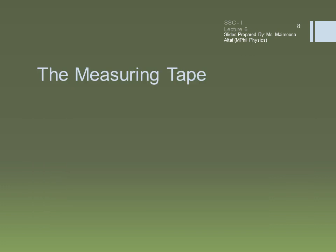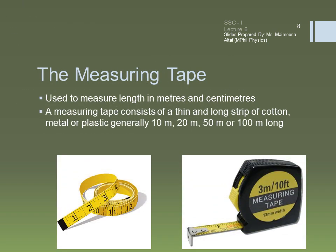Now we will discuss the second type of length measuring instrument, which is the measuring tape. Measuring tapes are used to measure length in terms of meters and centimeters. A measuring tape consists of a thin and long strip of cotton, metal, or plastic, which is generally 10 meters, 20 meters, 50 meters, or even 100 meters long. Measuring tapes are marked in centimeters as well as in inches. The smallest reading which can be measured with the measuring tape is also equal to 1 millimeter, or 0.1 centimeter.